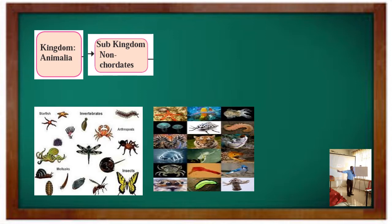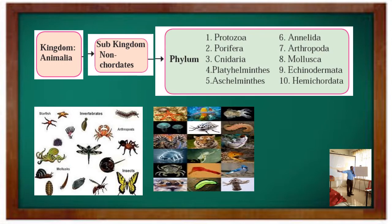Sub-kingdom non-chordates has ten phylums: Protozoa, Porifera, Coelenterata (that is Cnidaria), Platyhelminthes, Aschelminthes, Annelida, Arthropoda, Mollusca, Echinodermata, and Hemichordata. We have to study the different characteristics of the animals in these different phylums.